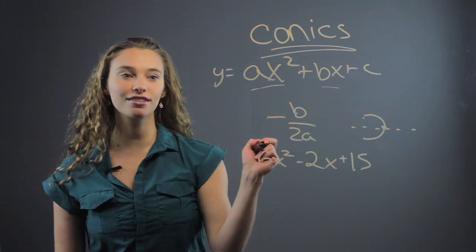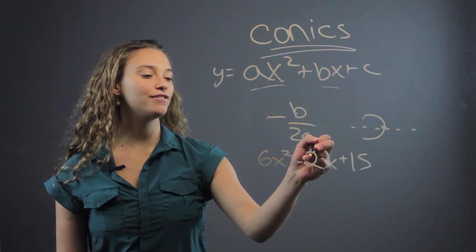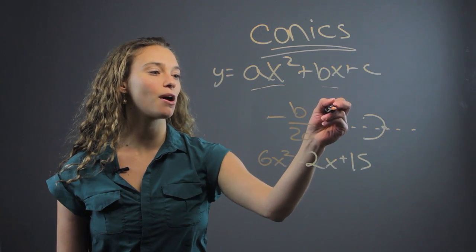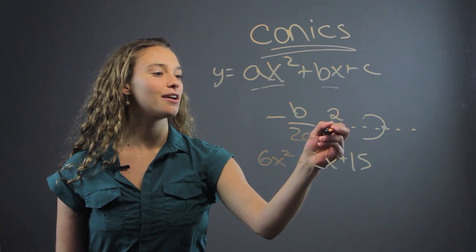So, let's use this form for vertex. Negative b over 2a, that's going to be negative 2 as negative b, so it becomes positive. So, that's positive 2 over 2a, 2 times 6, which is 12. 2 over 12 is 1 sixth.